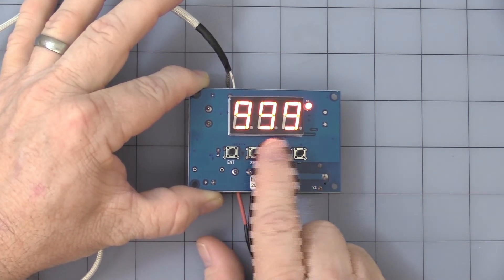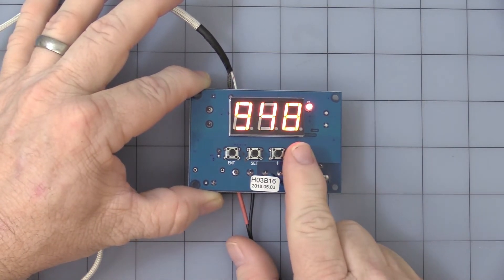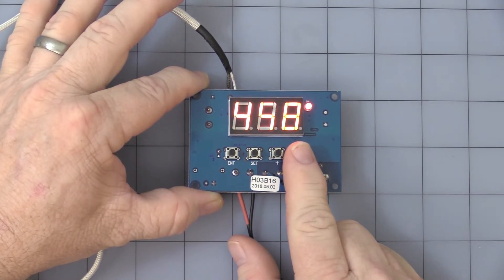Hit the set button again, and it comes factory set at 999 degrees. Let's run it down to about 120 degrees C. I'll show you how that operates here in a moment.